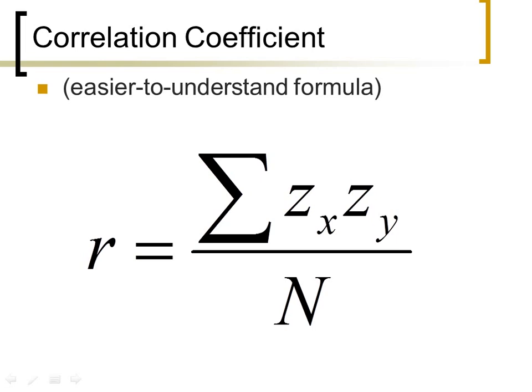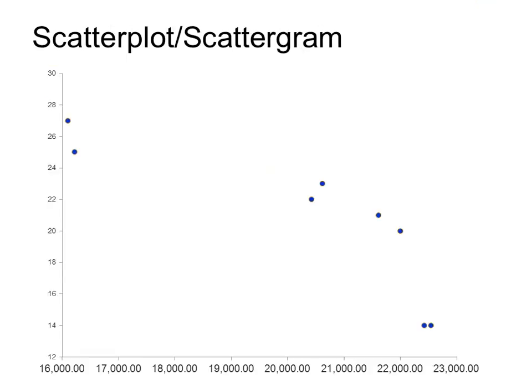Those green pluses and orange minuses on the graphs — that's all this formula is. If you add all those up with their sizes and divide by the number of points, you get r. The upper-right and lower-left quadrants contribute large positive values; the upper-left and lower-right contribute large negative values. They can cancel each other out — and taking the average of that plus-minus-ness is what the correlation coefficient represents: zx·zy for each point, summed up.